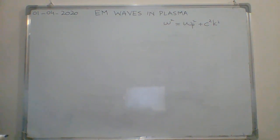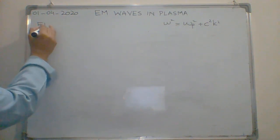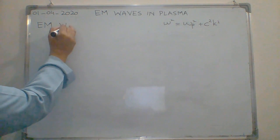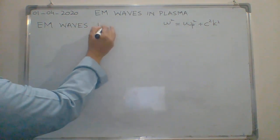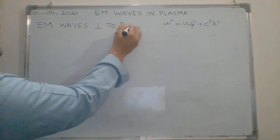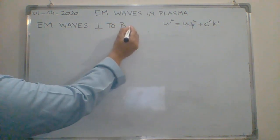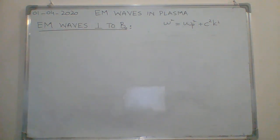There are two cases that we can consider. First, electromagnetic waves passing through plasma perpendicular to the applied magnetic field. Similarly, we can talk about electromagnetic waves that are propagating in plasma parallel to the applied magnetic field.